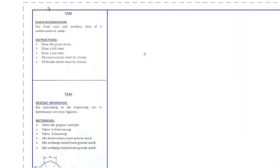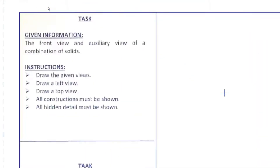Good morning, Grade 11. Today we're going to be looking at exercise 6.11. They say that from the front view and the auxiliary view of a combination of solids — you actually have a prism and a pyramid in one — you must redraw the given views, so that will be the auxiliary and the front view, then draw a left view and a top view with hidden detail, and it's not going to be cut at all.